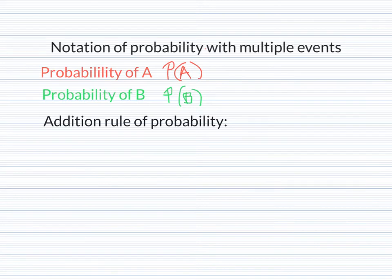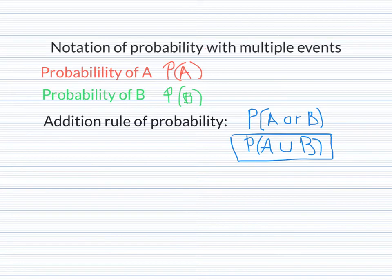Now the first multiple event we will see is the addition rule of probability. That would be where we're trying to find the probability of one event or another event happening. To find that probability, it will look like this: the probability of A or B. And then we shorthand that into the probability of A union B. So when you see the probability written like this, that means the probability of A happening or the probability of B happening. An example of that would be find the probability of rolling a dice and getting a one or a two on the dice. So it's one event or another event. Now actually finding the probabilities can get a little more complex than that. Sometimes the events may be overlapping or they could be mutually exclusive.